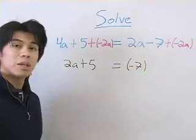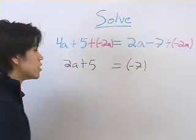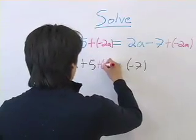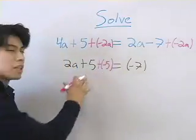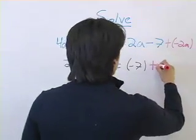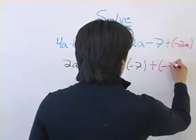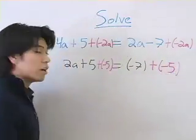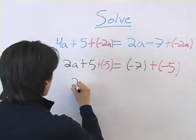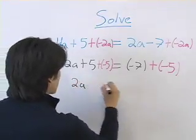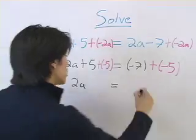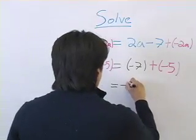We do the same exact thing, but this time for the 5. So we add negative 5 to both sides of the equation. So this equation becomes 2a equals negative 7 plus negative 5, which is negative 12.